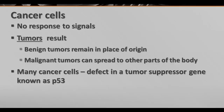Through studying cancer and how it behaves, and about the regulation of the cell cycle that doesn't exist in cancer, scientists have learned that there are a number of different tumor suppressor genes. The main one that is the focus of a lot of research is called P53. P53 is a tumor suppressor that will basically stop the formation of tumors if it's working properly. In a lot of cancers, there is a specific mutation in P53 that causes it not to work properly, turning off the stop signal and letting cell division proceed unchecked.